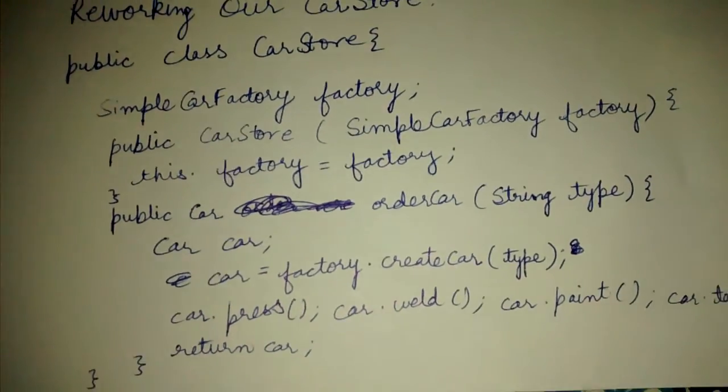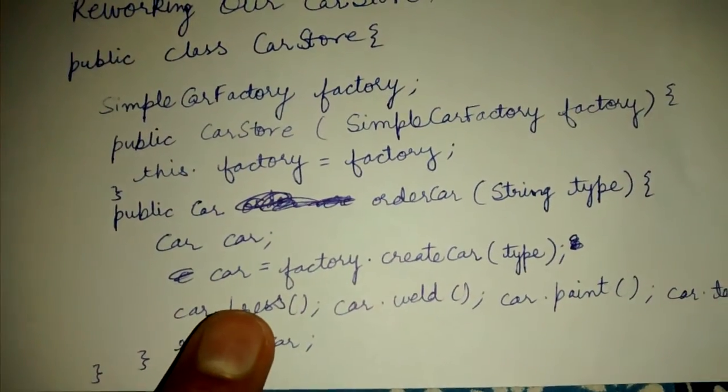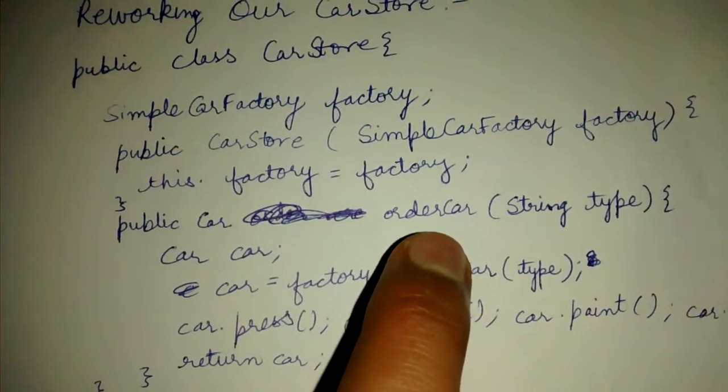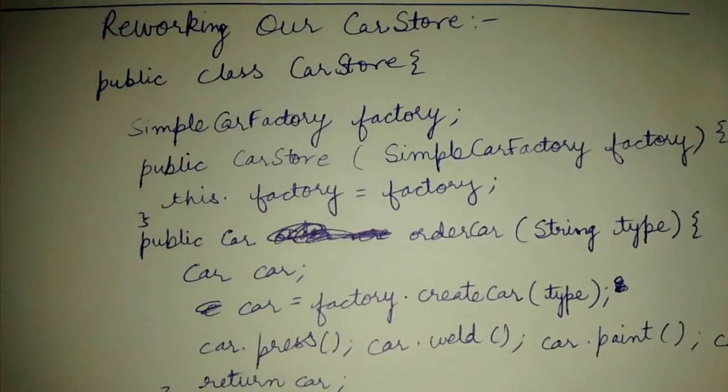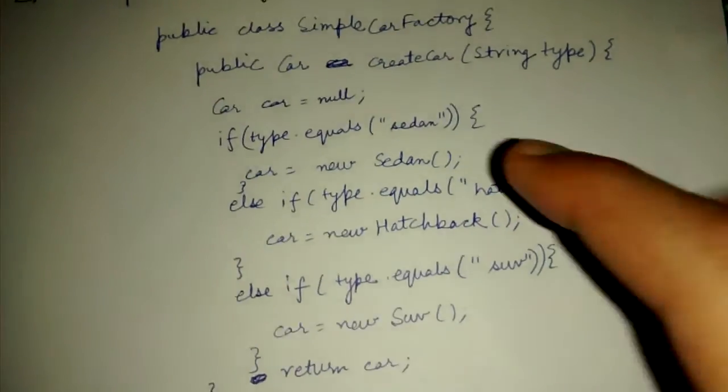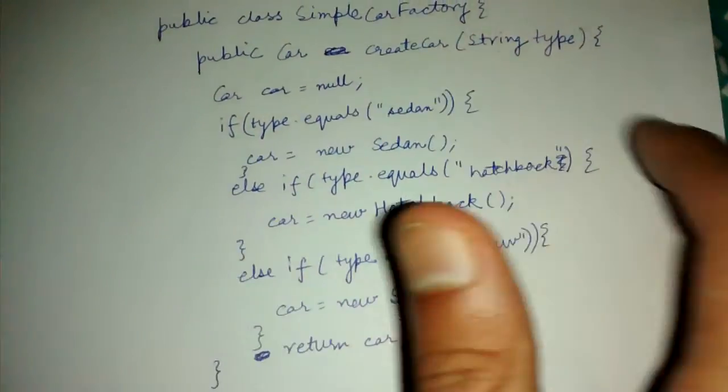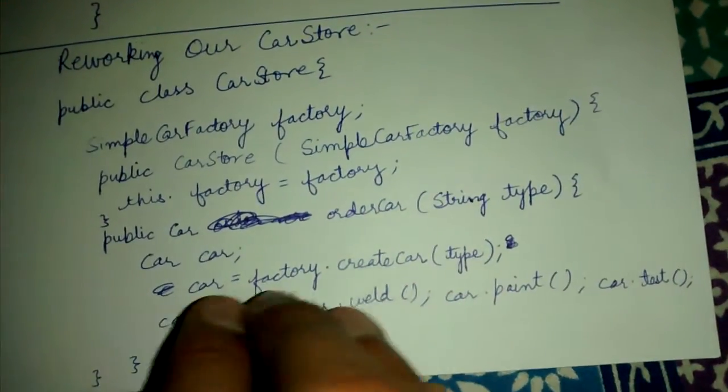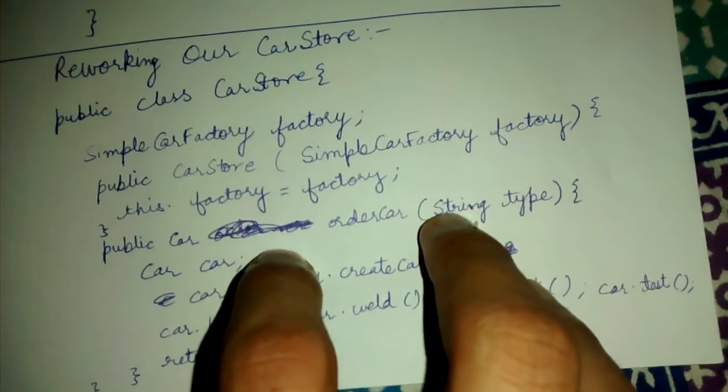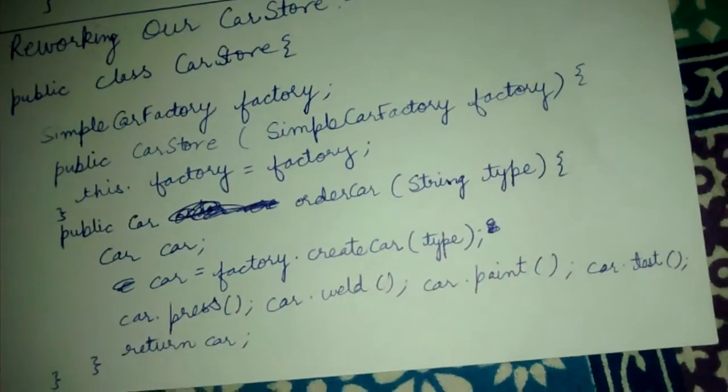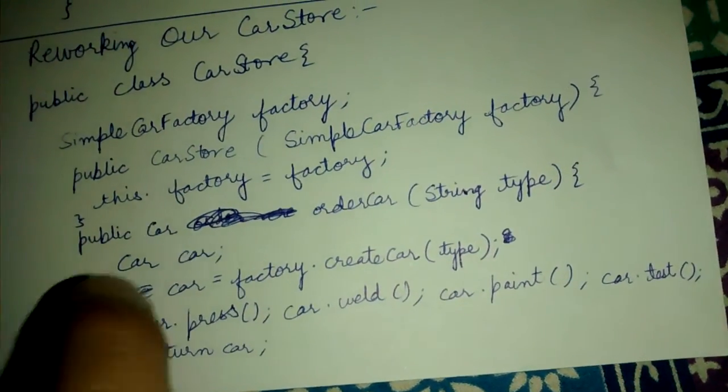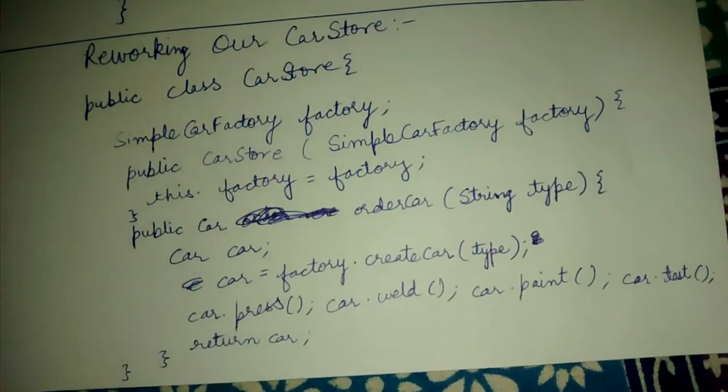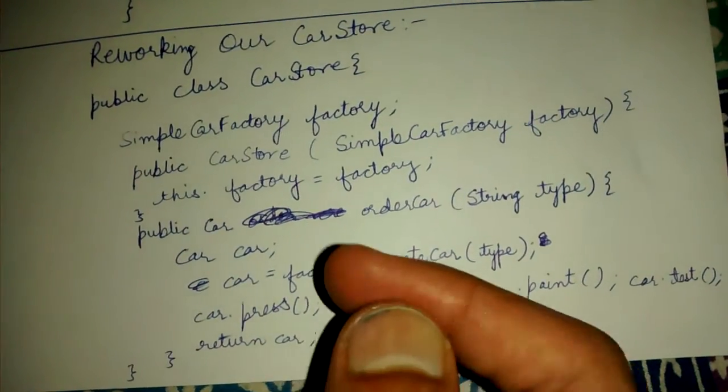Basically, even if our company stops producing sedans and hatchbacks, then also we have to change in the factory class only. The business class where the actual business logic is written, the press and all these actual methods are being called, these need not change.